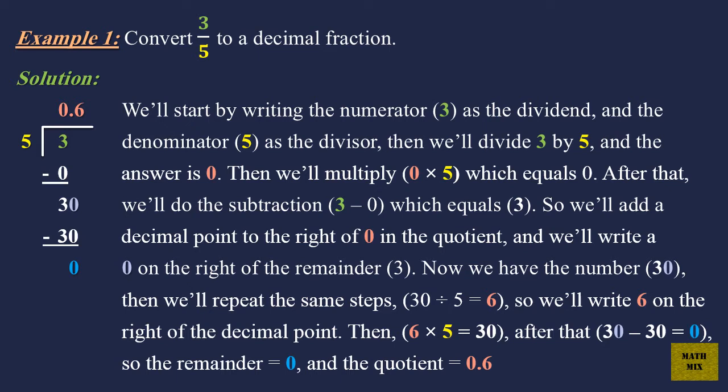So, we'll add a decimal point to the right of 0 in the quotient. And we'll write a 0 on the right of the remainder, 3. Now we have the number 30.